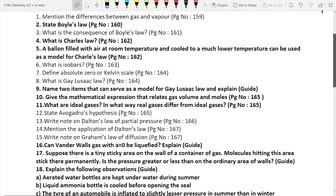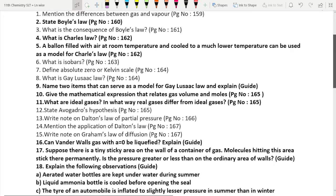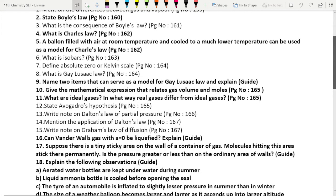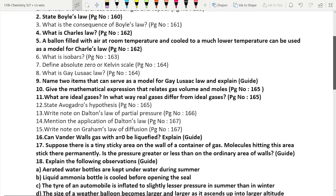Fifth question: A balloon filled with air at room temperature and cooled to a much lower temperature can be used as a model for Charles law. What is isobars? Define absolute zero or Kelvin scale. Gay-Lussac's law - important, eighth question, very important.